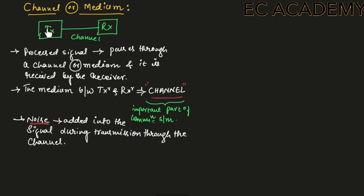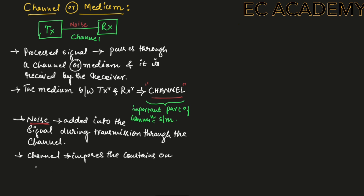Once the signal is transmitted through a transmitter to a receiver through a channel, noise will be added into the signal. Also, channel imposes constraints on bandwidth.